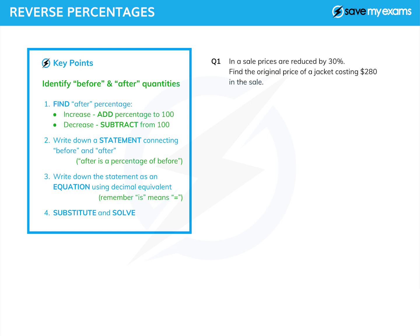The first thing we're going to do is identify before and after quantities — before the percentage change and after the percentage change — and then we're going to find the after percentage. If it's a percentage increase we add the given percentage to 100, and if it's a percentage decrease we subtract the given percentage from 100. So if it was a 5% increase we'd end up with 105%, and if it was a 5% decrease we'd end up with 95%. Then we're going to write down a statement connecting the before and the after.